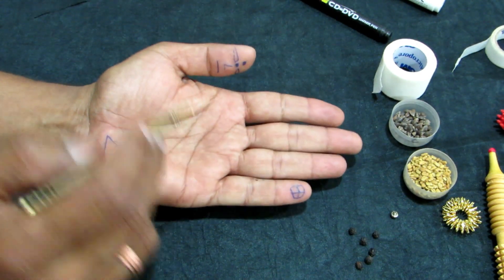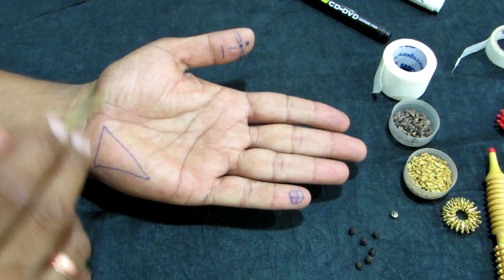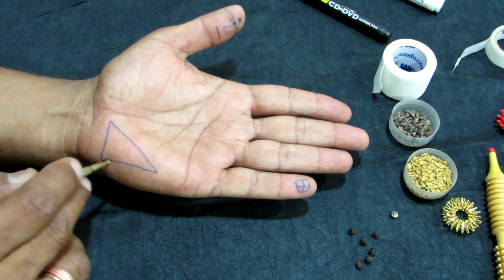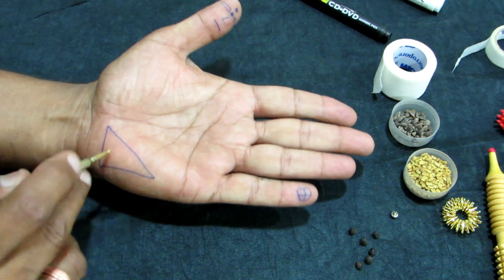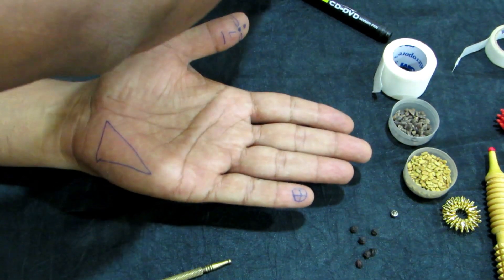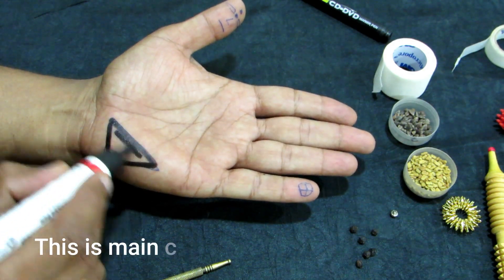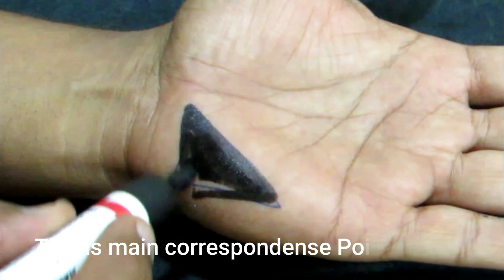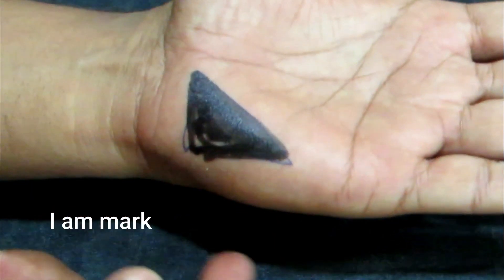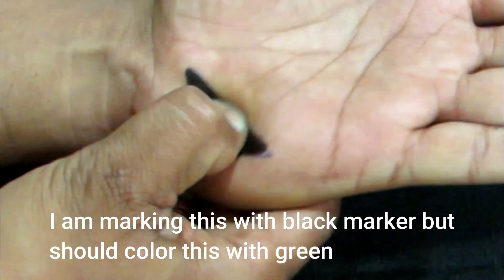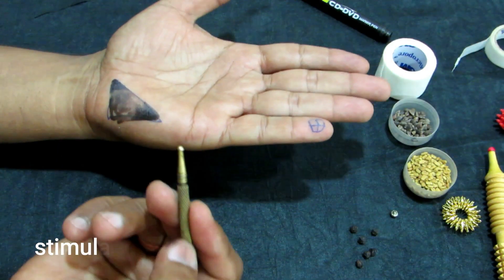All the acupressure points are in the left hand. As you can see, you have to treat liver first. This is the main correspondence point of liver. You have to stimulate this point with the help of your thumb or with the help of a Jimmy tool.